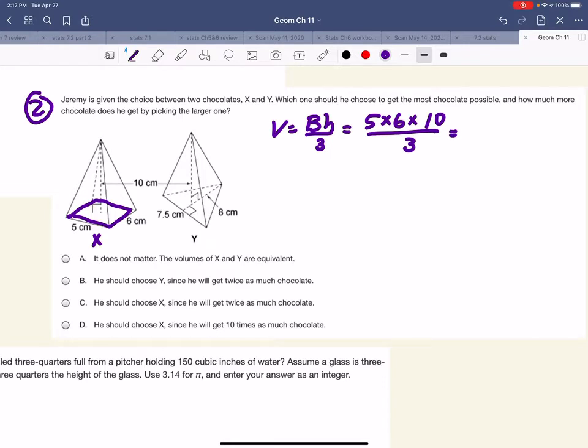Wait a minute. This calculator's not turning on. Let me grab another calculator. So that's ready times 10, divide by 3, 100 centimeters cubed. Alright, now let's do this triangle.